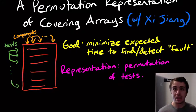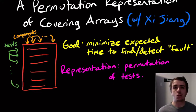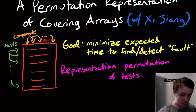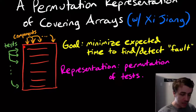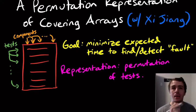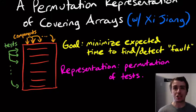Covering arrays are in a field called interaction testing, where we have a bunch of components in some system that we don't really know the properties of necessarily, and we want to detect or find faults in that system. We build a bunch of tests, and the property of covering arrays is that at most a certain size that you specify, all of the interactions of these components at most that certain size are all covered.